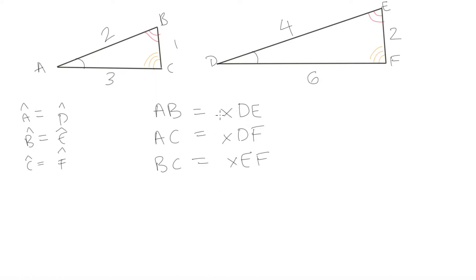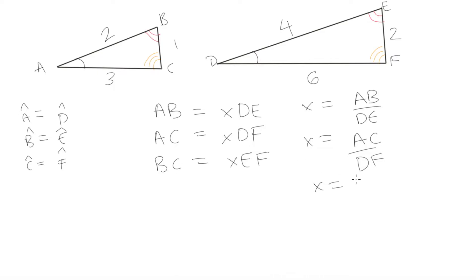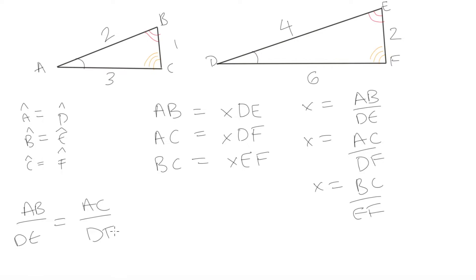If we rearrange for X, we get X equals AB over DE, X equals AC over DF, and X equals BC over EF. Since X has to be equal in each of these cases, we know that AB over DE has to equal AC over DF, which has to equal BC over EF.